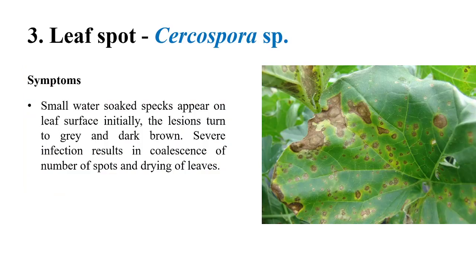The next disease is leaf spot, caused by Cercospora species. Initially, small water-soaked spots appear on the upper surface of the leaf. Later, these small spots coalesce and look like very big, slightly concentric spots. In Alternaria disease, concentric rings can be clearly observed, but in Cercospora the concentric appearance is slight. The spots are gray or dark brown in color.